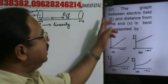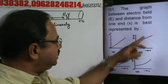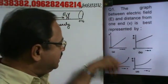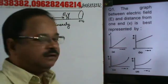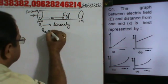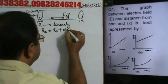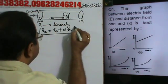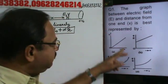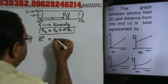Question number 1: the graph between electric field E and distance from the left end x — which graph is correct? E versus x. Now, resistivity varies linearly, so we can write rho at any distance x as: rho(x) = rho_naught + alpha·x.